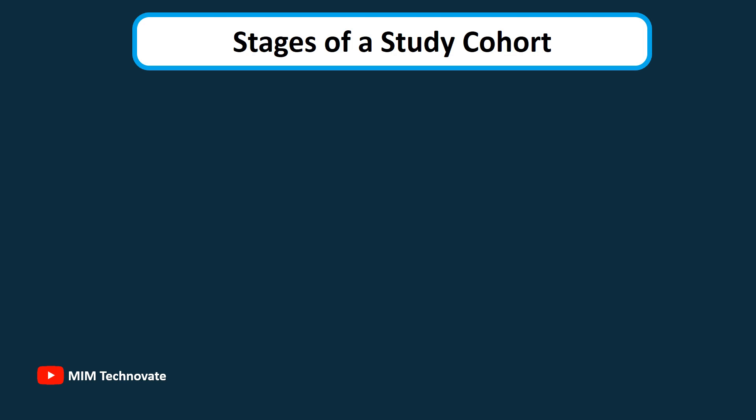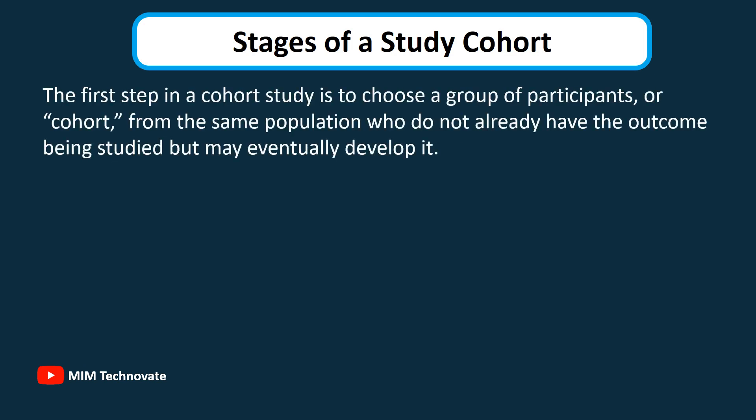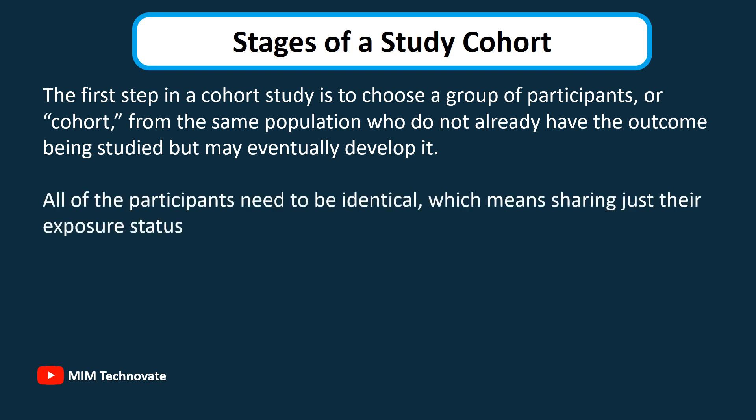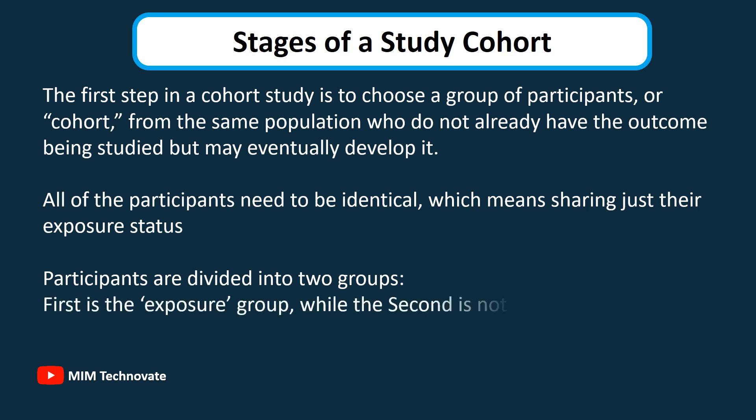Stages of a cohort study: The first step is to choose a group of participants, or cohort, from the same population who do not already have the outcome being studied, but may eventually develop it. All participants need to be identical, sharing just their exposure status. The participants are then divided into two groups: the exposure group and the unexposed group.